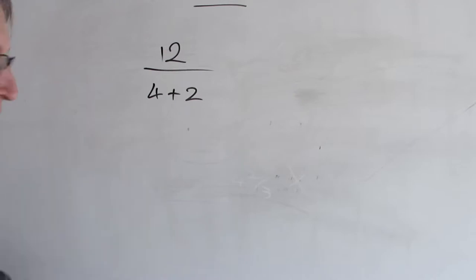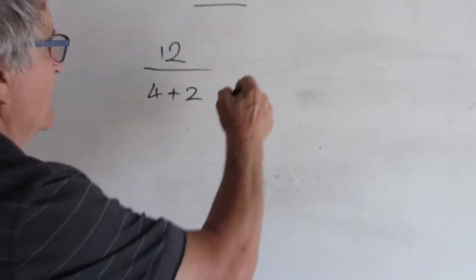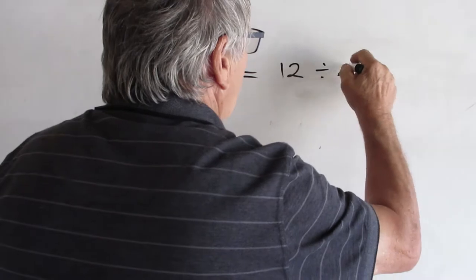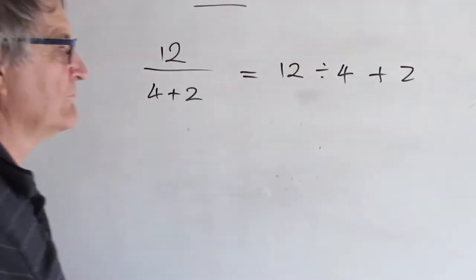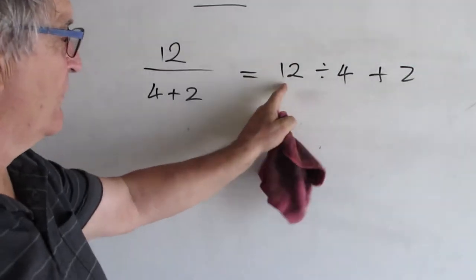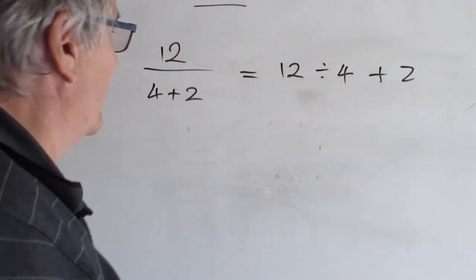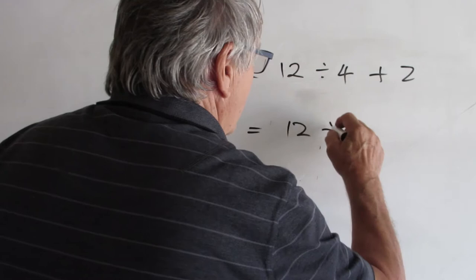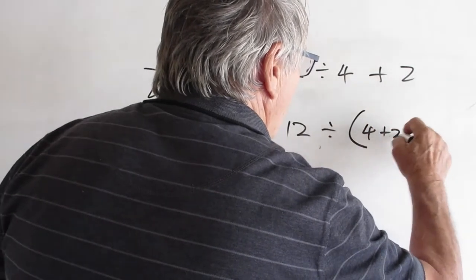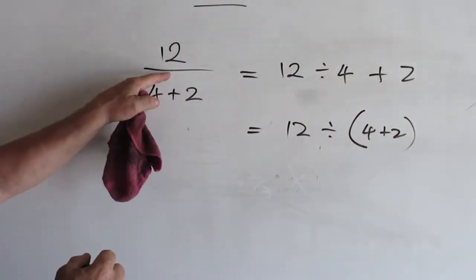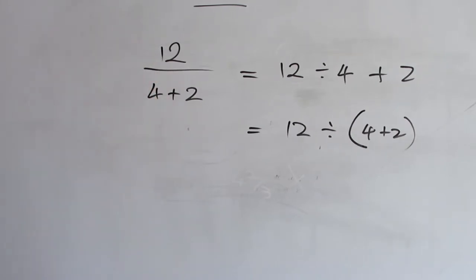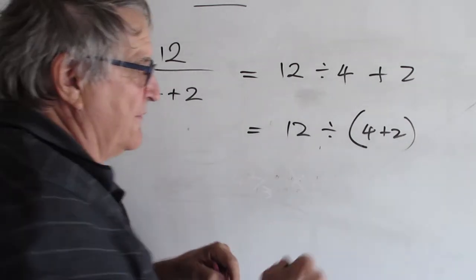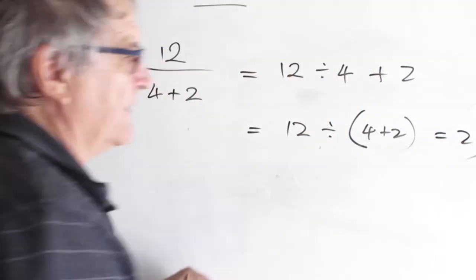If you put it in your calculator as you read it, you would be putting in 12 divided by 4 plus 2, and of course you'd get 5. 12 divided by 4 is 3, plus 2 is 5. Wrong. So you have to have 12 divided by bracket 4 plus 2. This is your bracket, your hidden bracket. 4 plus 2 is 6, 12 divided by 6 is 2. So that's our correct answer.